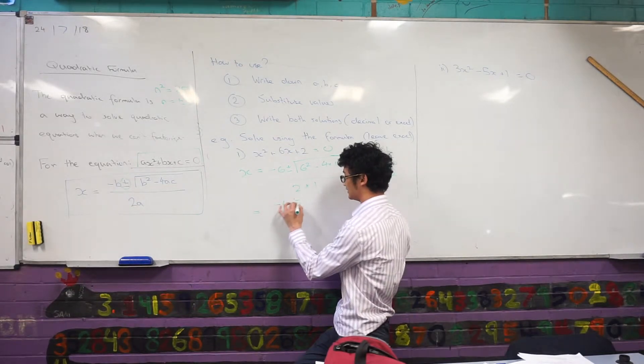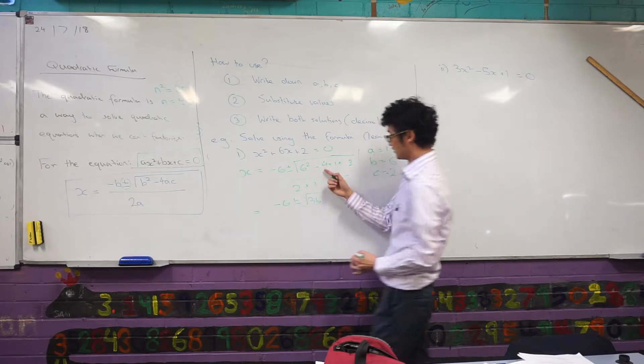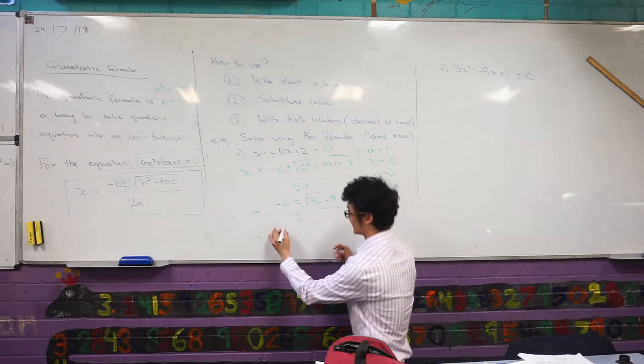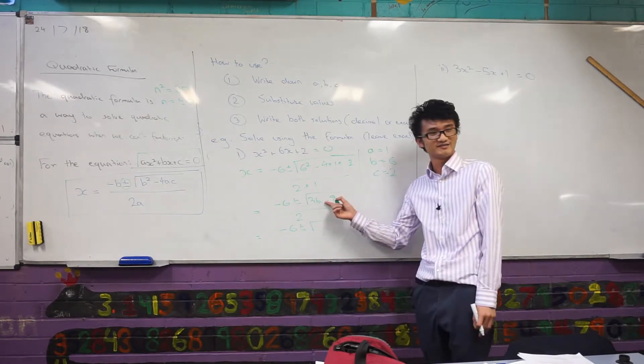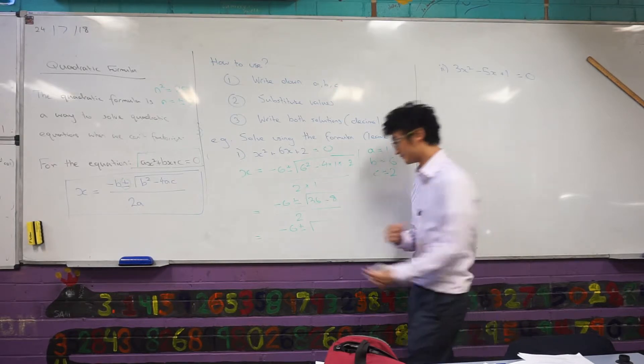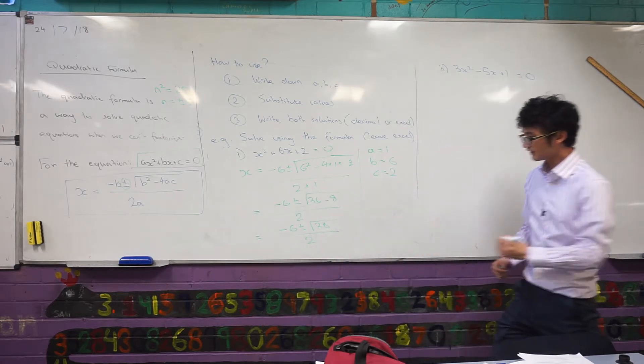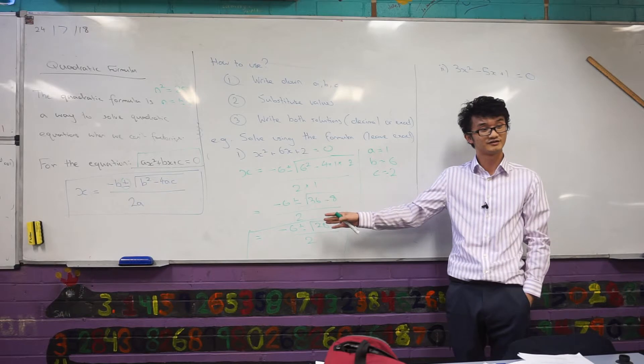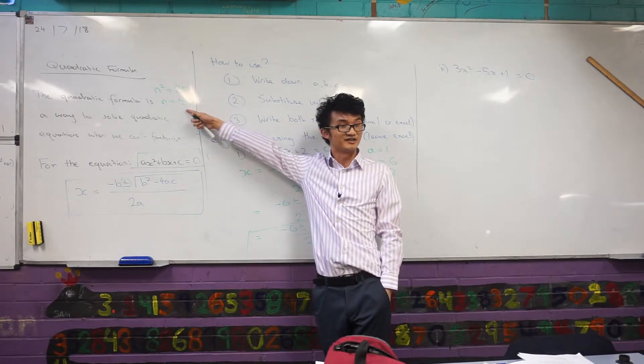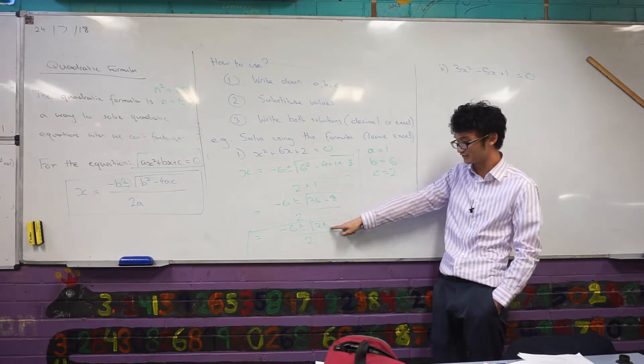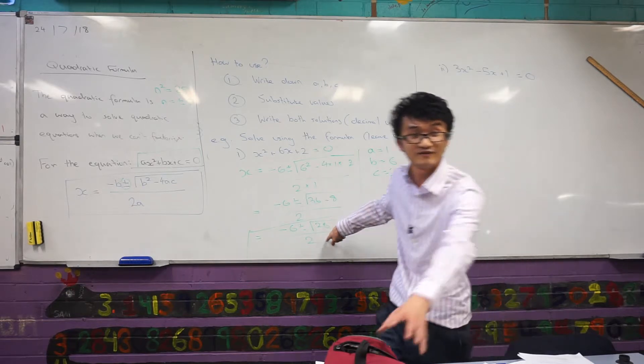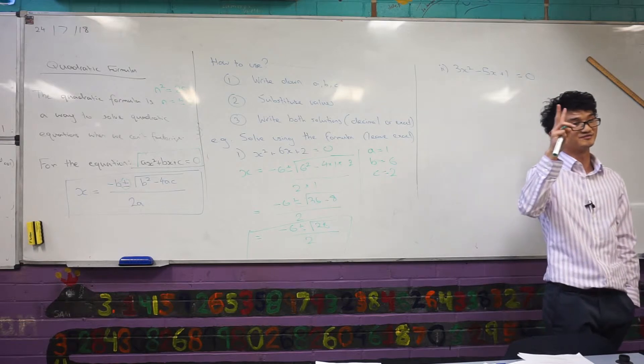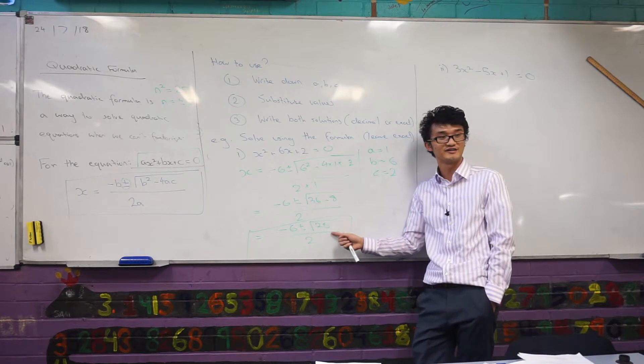I would say this is equal to minus six plus or minus root, well, six squared is just 36. Four times one times two, that's just eight, all over two. And then I can still keep going. Well, 36 minus eight, what's that going to be? That's just 28, 28 over two. So my final answer is actually this line here. The plus or minus, we can just leave it. In the same way, remember this one here? I said my answer is plus or minus five. In here, my answer is minus six plus or minus root 28 over two. I already have two answers there because the plus or minus is kind of inbuilt into this equation. That already gives me two solutions.